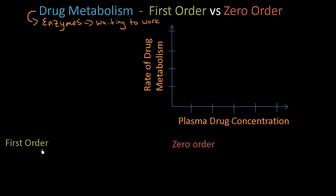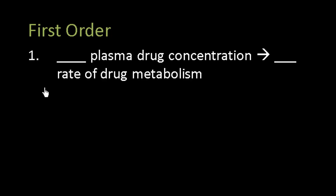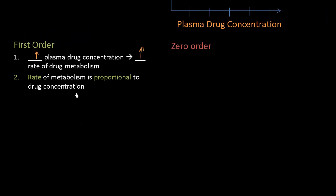If you were going to remember only one thing about first order kinetics, I would want you to remember the relationship between the plasma drug concentration and the rate of drug metabolism. As I increase the plasma drug concentration, we are putting more of these enzymes to work and as a result the rate of drug metabolism increases. Another way of saying the same thing is that the rate of metabolism is proportional to the drug concentration.